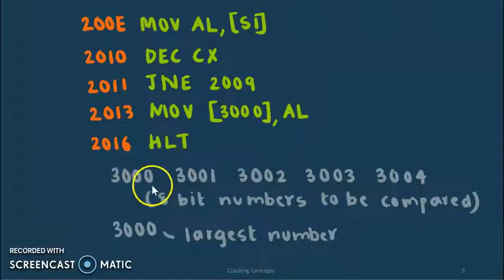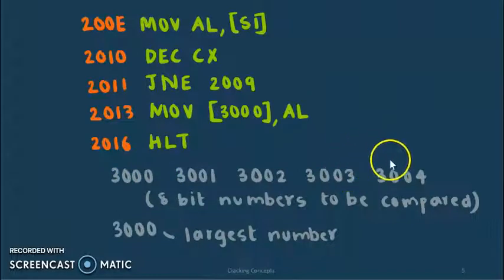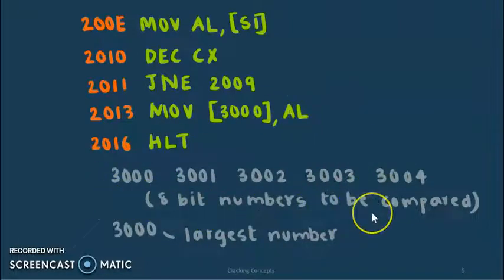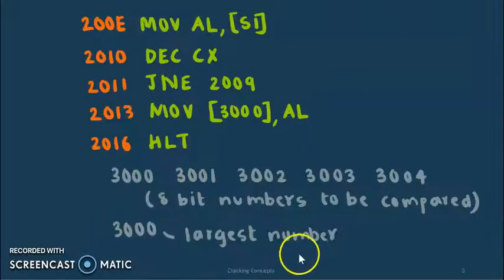Note that at locations 3000, 3001, 3002, 3003, and 3004 we will have the five 8-bit numbers which we are going to compare, and the result of the comparison — that is, the largest number — will be stored back at location 3000 itself.